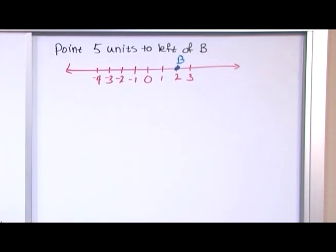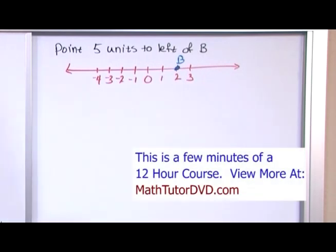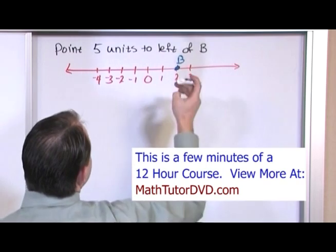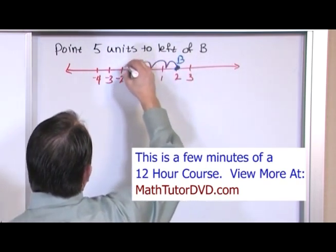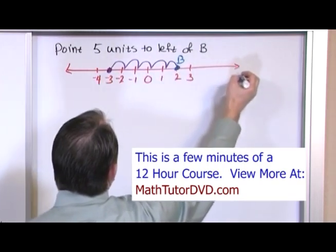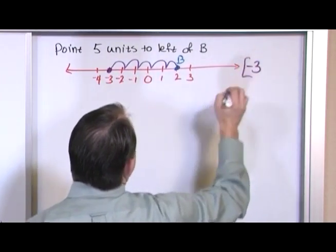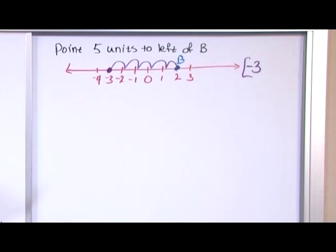So if you were told five units to the left of B, how would you do that? Well, to the left means you go to the left. One, two, three, four, five, and you landed on negative three. So the answer is negative three. And that's where you would land.